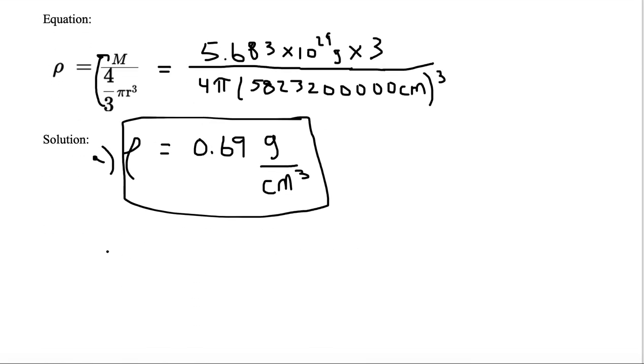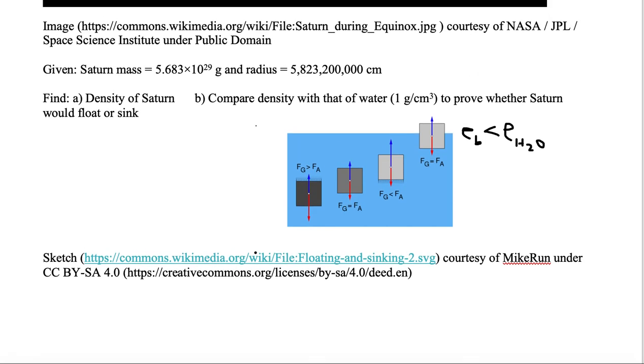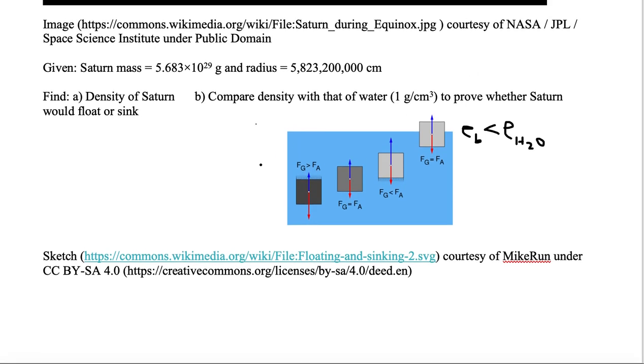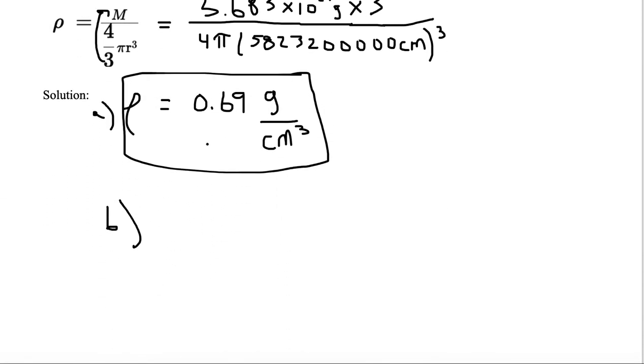Now we can look at B. And we know that the density of water is 1 gram per centimeter cubed. And as you can see, 0.69 is less than 1. So therefore, the density of Saturn is less than the density of that of water.